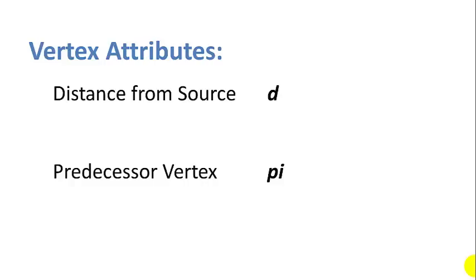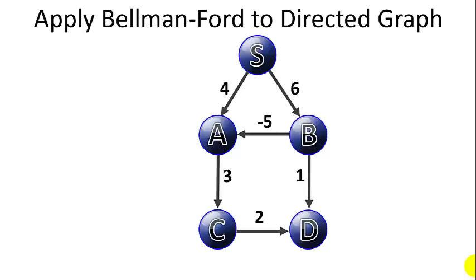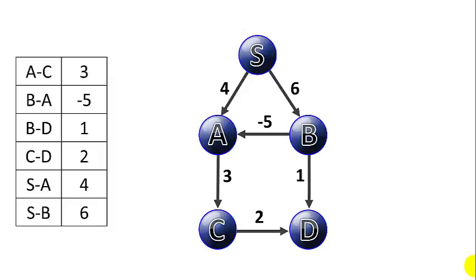We're going to use a couple of vertex attributes for this video: the distance from the source, D, and the predecessor value, pi, which you'll see noted in the graph. Let's apply Bellman-Ford to a directed graph, starting at source vertex S. First we list out all the edges in the graph with their weights in alphabetical order, and we'll iterate through the edges multiple times. We initialize the distance to each vertex from the source to infinity — meaning unreachable — except the distance to S, which is zero.